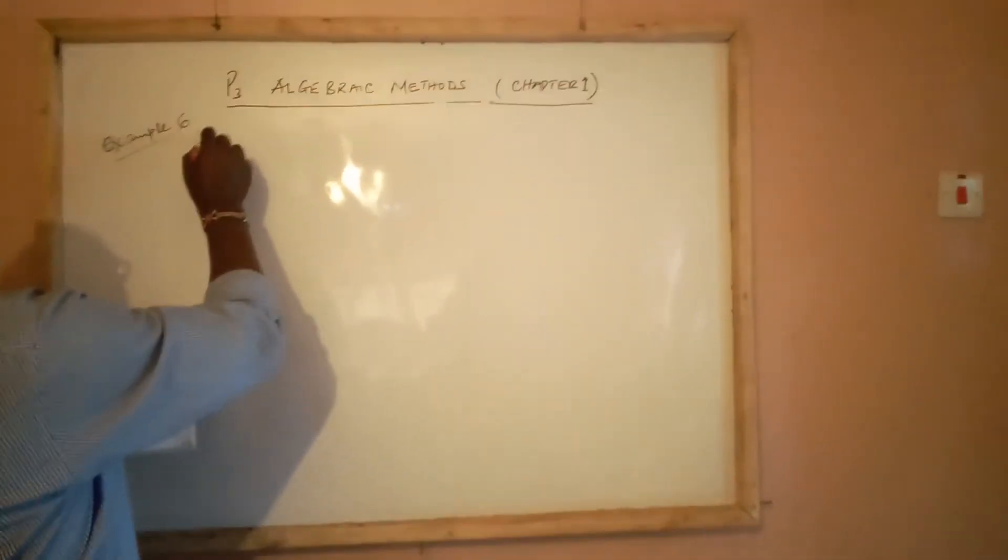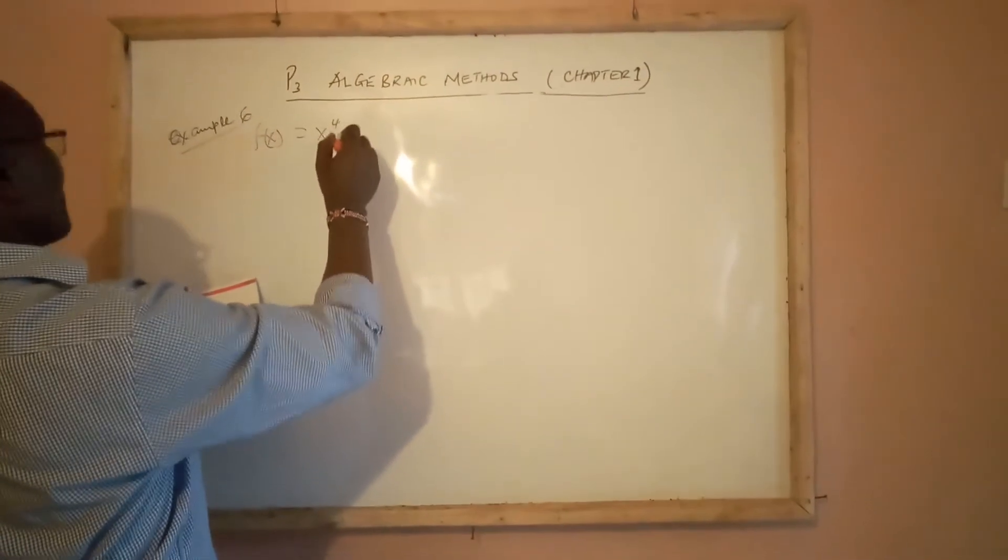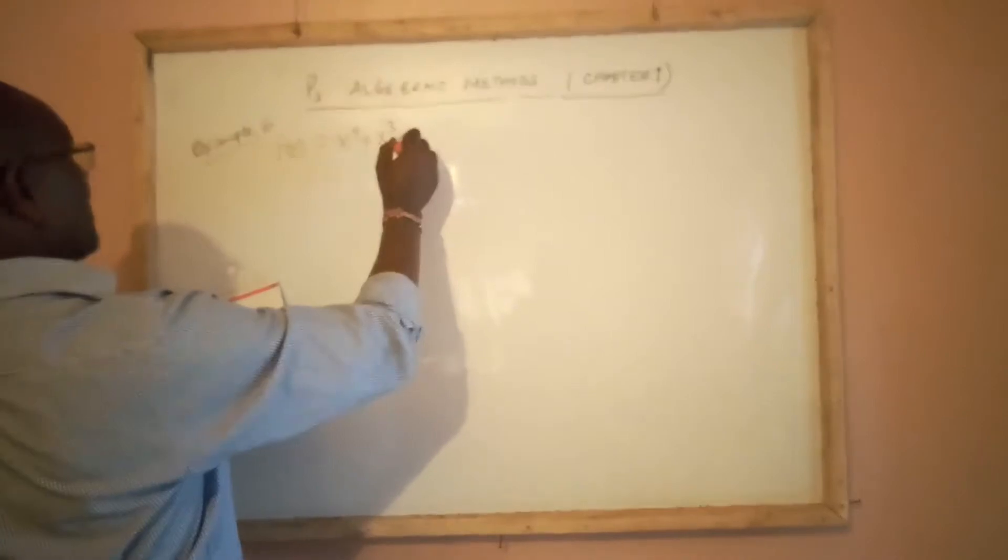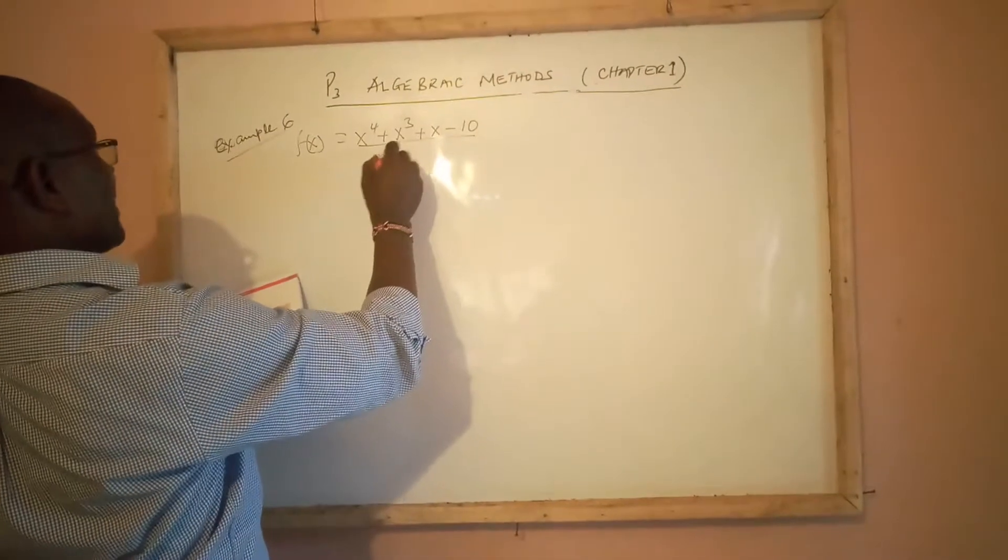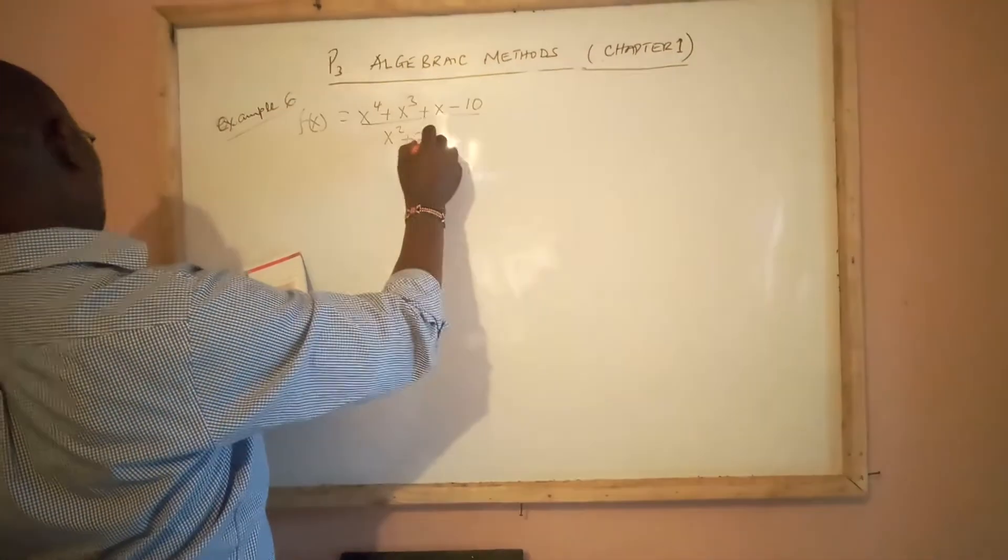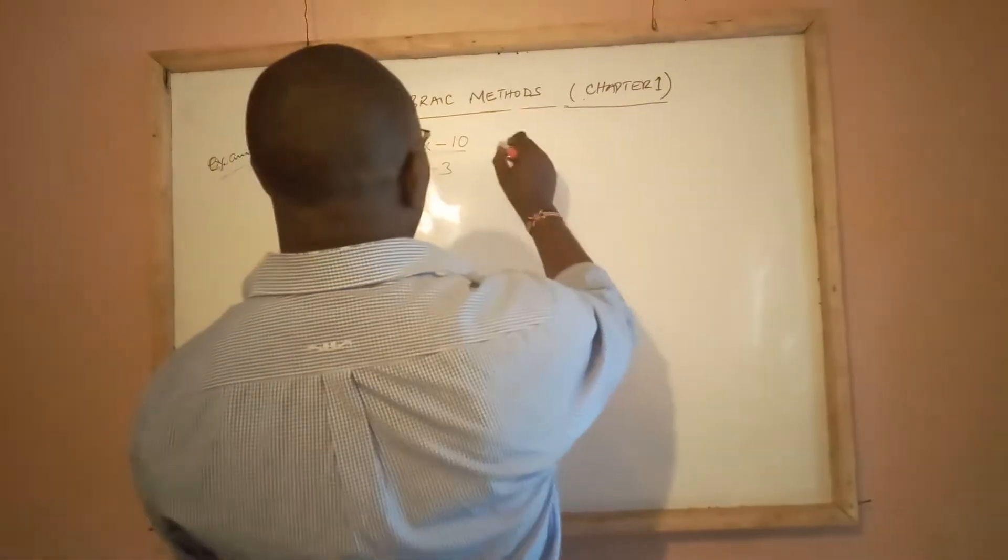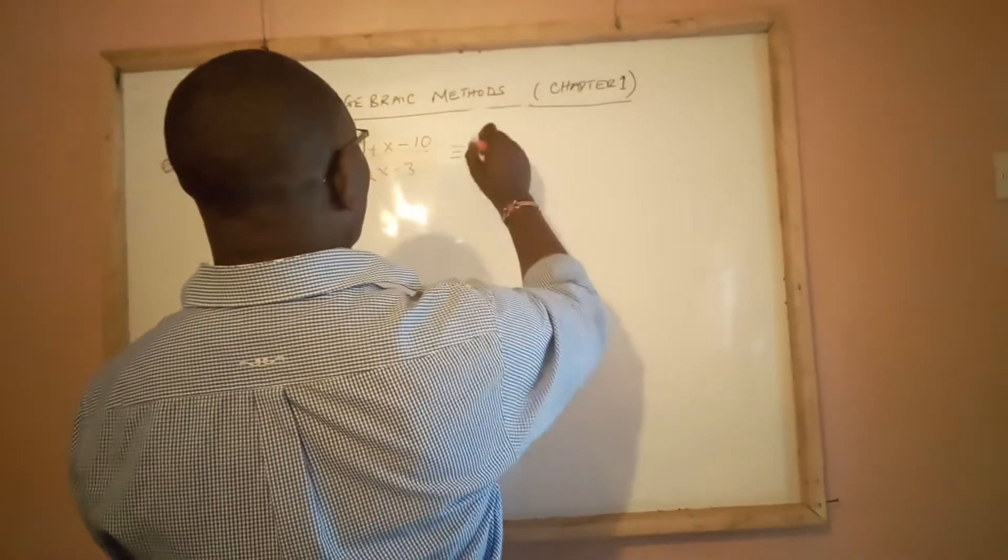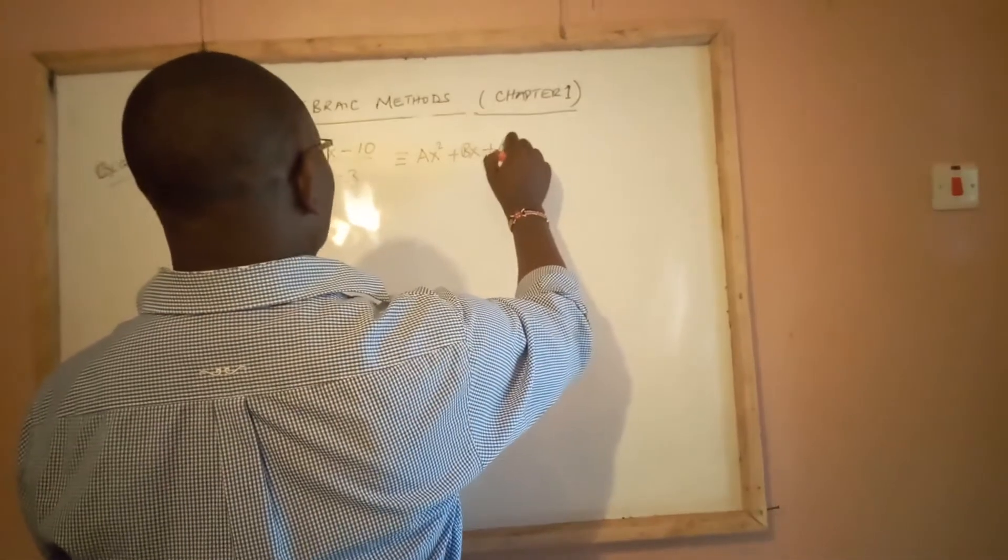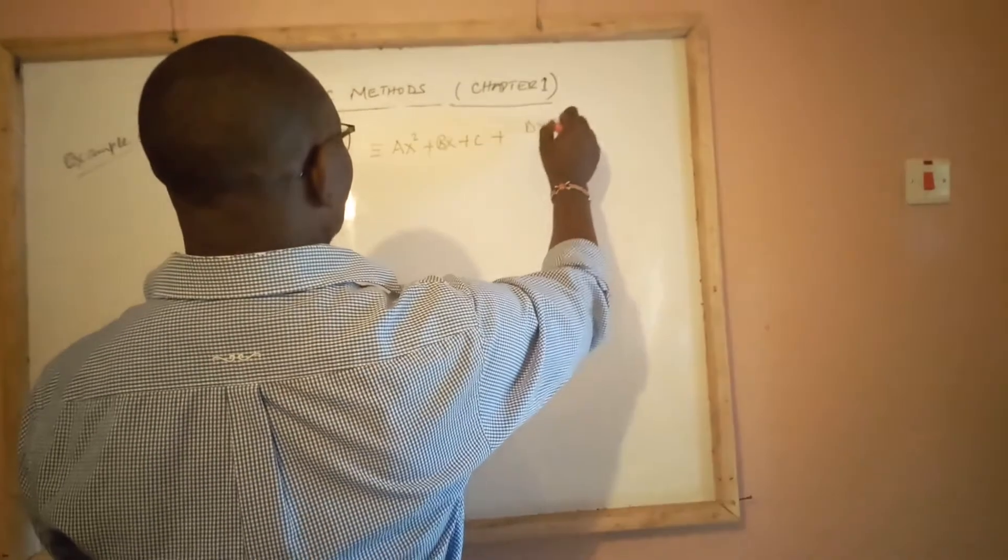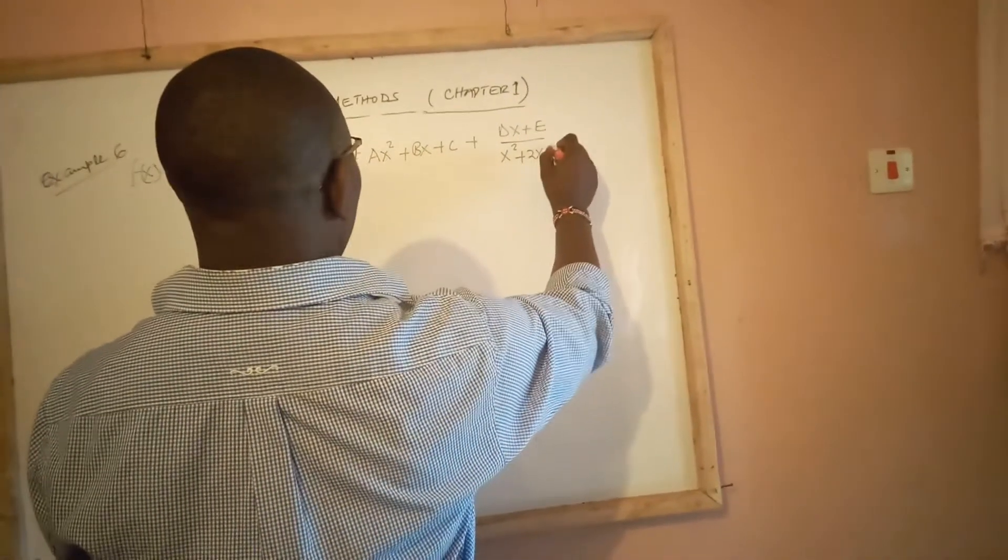We have f(x), the function of x, is equal to x^4 + x^3 + x - 10 all over x^2 + 2x - 3. We are told to show that f(x) can be written in terms of ax^2 + bx + c plus (dx + e) all over x^2 + 2x - 3.